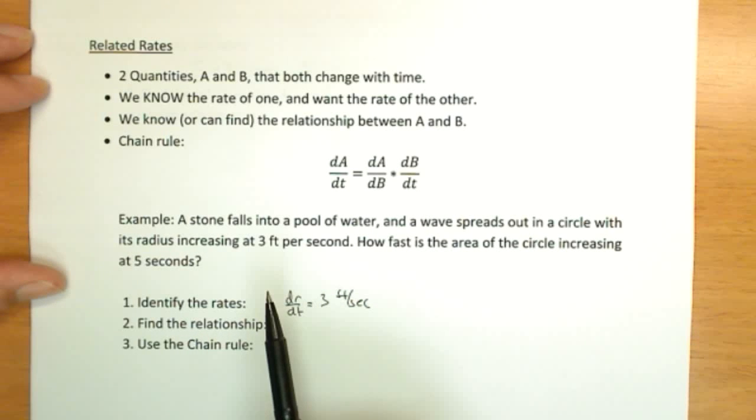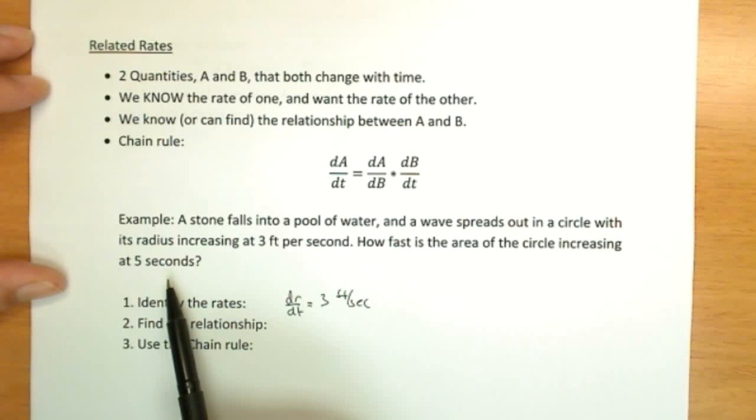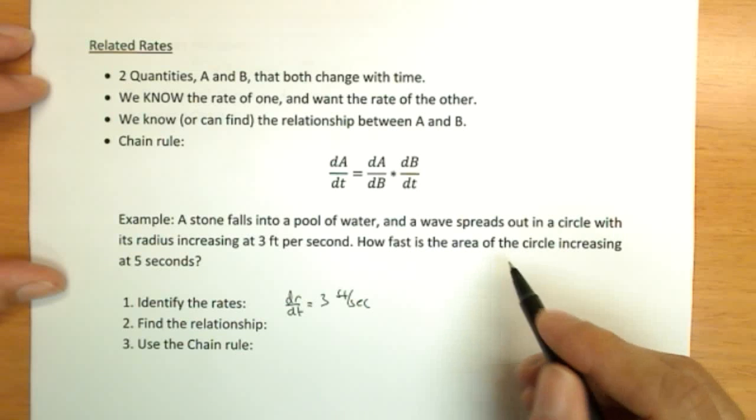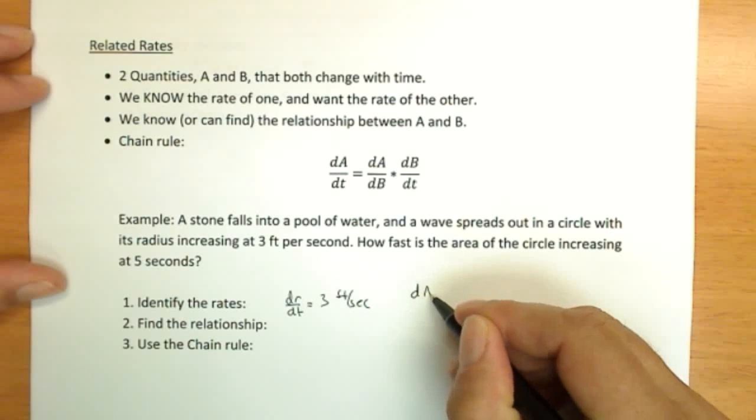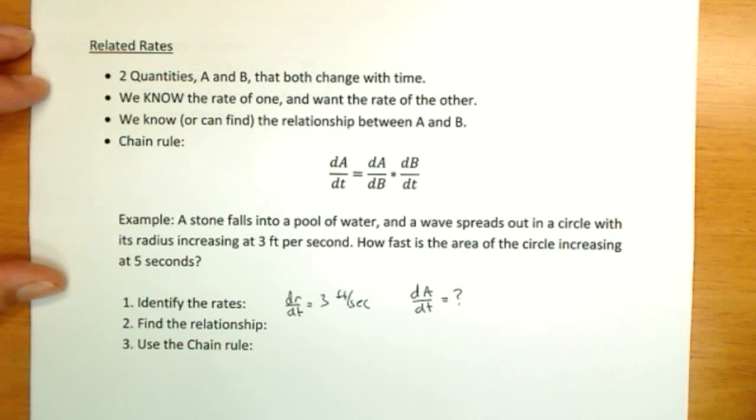dr/dt equals positive 3 feet per second. One rate, and there's always two. So the second one is the one we're finding. How fast is the area of the circle increasing at 5 seconds? How fast is something increasing? The area of the circle. So how is the area changing over time? dA/dt equals question mark.